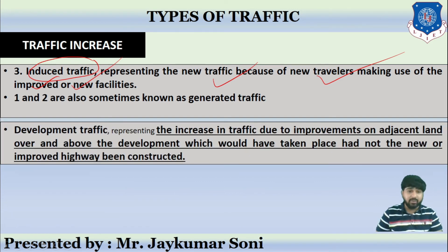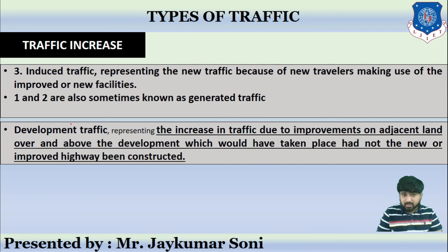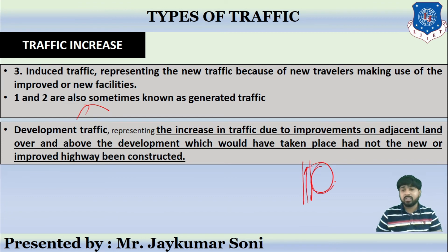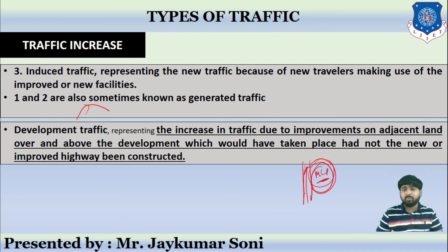The last type is development traffic, which is being developed. It represents the increase in traffic due to improvement of the adjacent land or the development which would have taken place had the new or improved highway been constructed. For instance, if this is the highway and the adjacent barren land gets improved — like McDonald's or Domino's being constructed there — then traffic would be generated. That is development traffic.